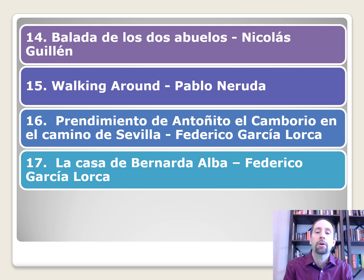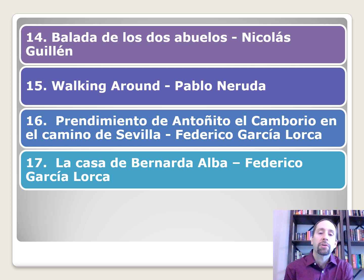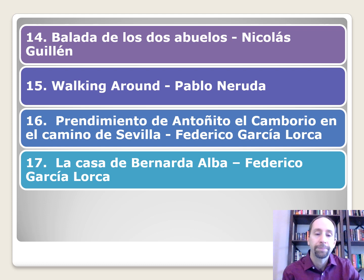Balada de los dos abuelos by Nicolás Guillén. Walking Around by Pablo Neruda — this is the only title in English on the list; he wrote it about his confusion being in Asia surrounded by languages he did not understand. Prendimiento de Antoñito el Camborio en el camino de Sevilla by Federico García Lorca — he stresses the innocence of 'little Anthony' with the diminutive Antoñito. Also by García Lorca: La casa de Bernarda Alba. He's one of the few authors who appear twice — the first is a poem, the second is a play.